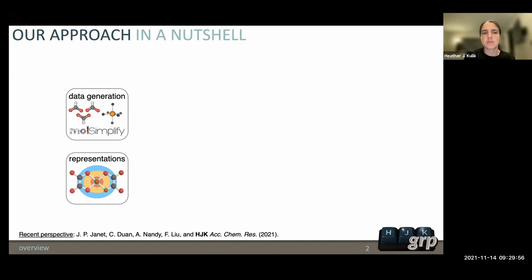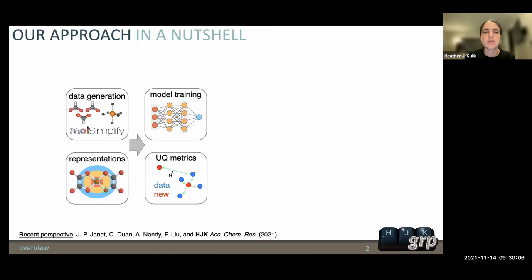Once we have some sort of data set source that we generate as well as molecular representations, we train machine learning models, which includes artificial neural networks. We've also spent a lot of time thinking about how do we know when a machine learning model is predictive or not, so how do we quantify uncertainty. We've developed new uncertainty metrics including the distance in latent space.